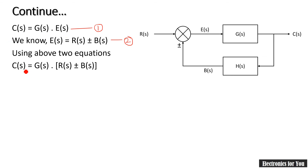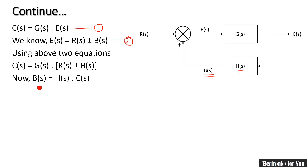If we put E(S) from equation 2 into equation 1, we get C(S) = G(S) · (R(S) ± B(S)). Now B(S) is the output of the feedback path, so as per our formula, B(S) equals H(S) multiplied by its input, which is C(S). Therefore B(S) = H(S) · C(S). Let this be equation number 3.